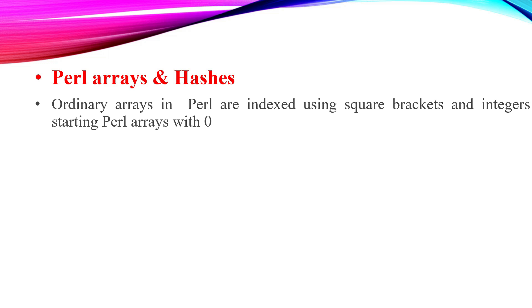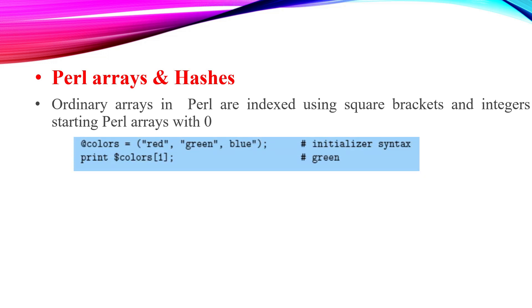Ordinary arrays in Perl are indexed using square brackets and integers, starting from 0. For example: @colors = ('red', 'green', 'blue'). The prefix character is '@'. Then print colors[1]. In Perl, arrays start at 0, so colors[1] is green.